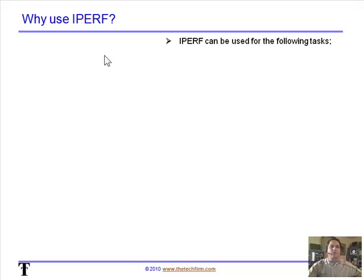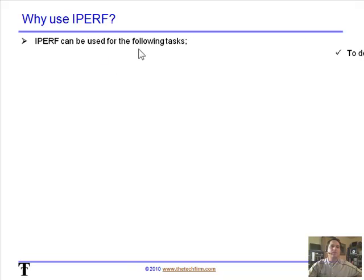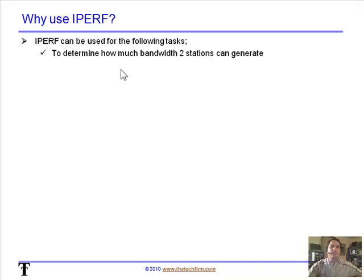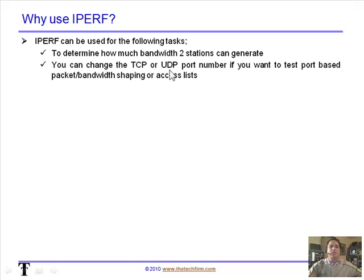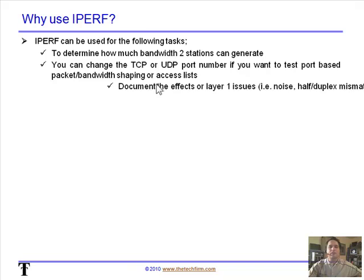What is iPerf and why would we use it? iPerf can be used for the following tasks. We can try to determine how much bandwidth two stations can generate. We can also change the TCP or UDP port numbers if we'd like to test port-based packet or bandwidth shaping, or maybe test an access list or some kind of filter.